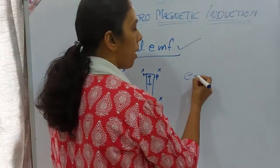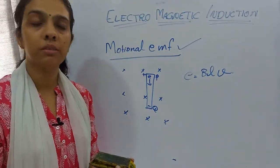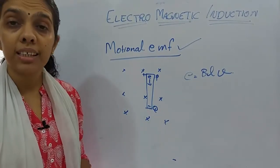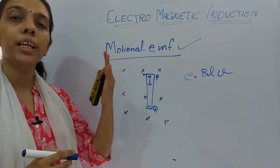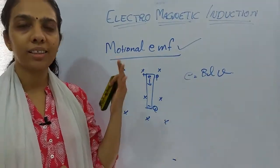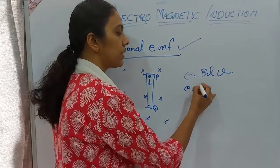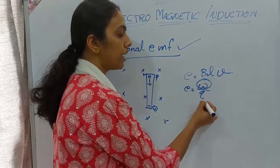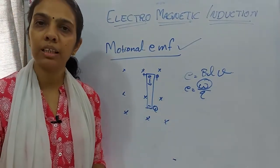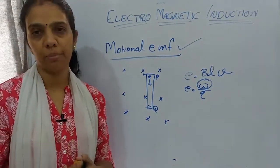The value of motional EMF is given by E = BLV, where B is the magnetic field, L is the length of the conductor, and V is the velocity of the conductor moving in the magnetic field. The derivation is in your textbook — starting from work done per unit charge, E = W/Q, and dividing accordingly to get E = BLV.